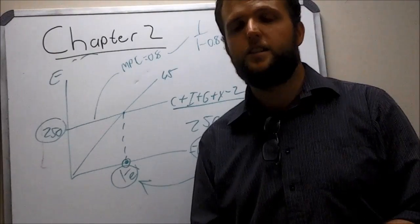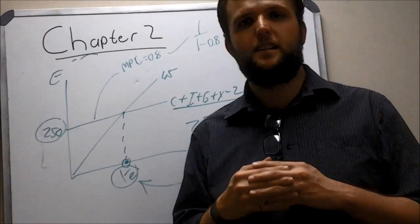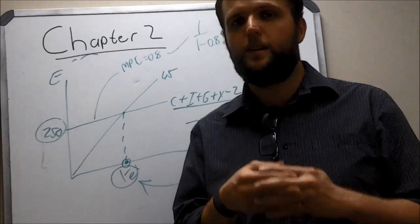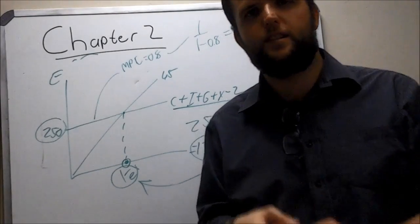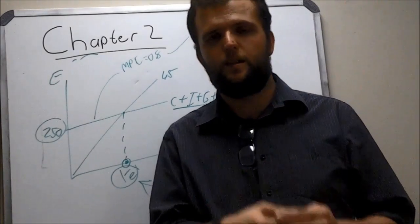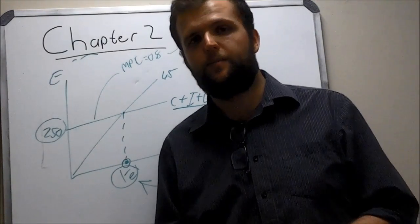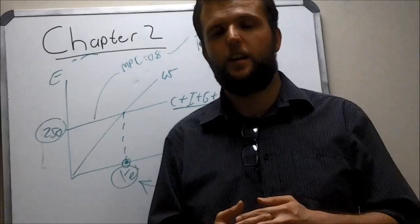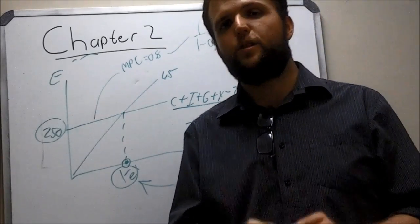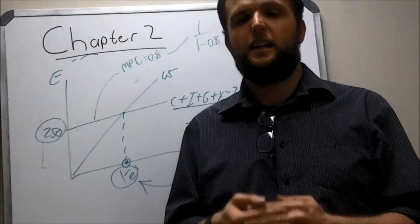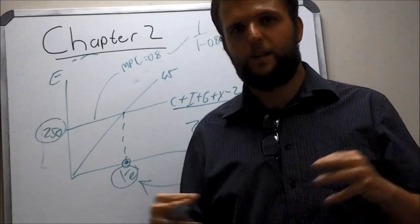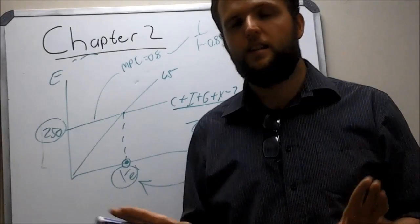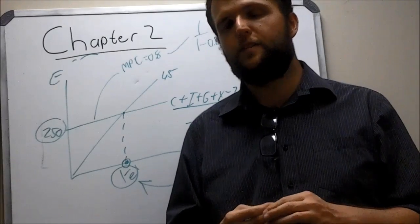More importantly, it's crucial to understand these concepts — know what they are, what they are called, and what will influence them. What influences autonomous spending? What influences consumption? What influences income? I hope this explanation clarifies some of the more complicated concepts. It's a quick overview of chapter 2, and you can expand on it from your textbook. Thank you very much, enjoy your day, and I hope to see you in class.